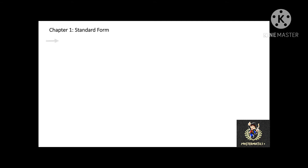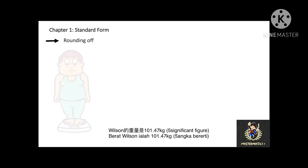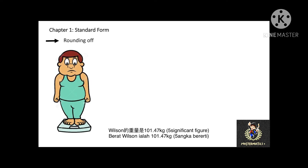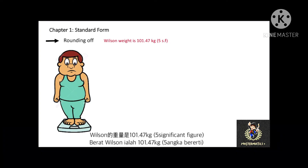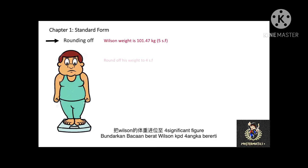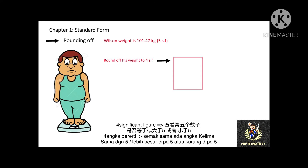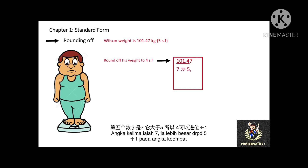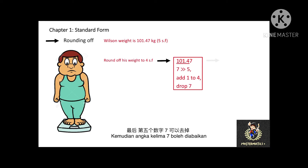Let's proceed to rounding off. For easier illustration, we will discuss Mr. Wilson's weight. Mr. Wilson's weight is 101.47 kg, which is 5 significant figures. If I want to round off his weight to 4 significant figures, we look at the fifth digit and check whether it is 5 or more or less than 5. The fifth digit is 7, which is more than 5. Therefore, we add 1 to the previous digit — adding 1 to 4 and dropping the 7. Therefore, in 4 significant figures, the answer is 101.5 kg.